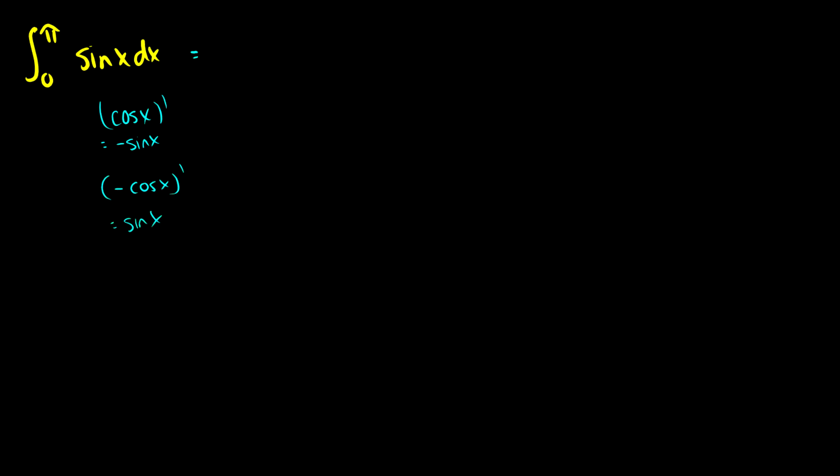So this means that it is negative cosine of x from 0 to pi. When we plug this in we get negative cosine of pi minus negative cosine of 0, so this is plus cosine of 0. This is negative negative 1 plus 1, which equals 2.